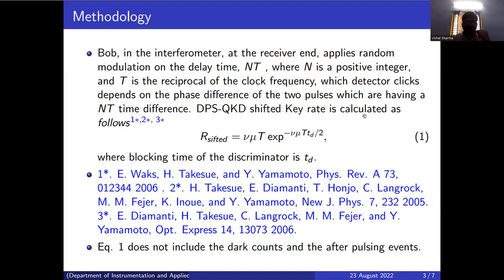In DPS QKD, it is like a Bob in the interferometer at the receiver that applies random modulation with delay time T, where the positive integer is the reciprocal of the clock frequency. The detector clicks depend on the phase difference of the two pulses, which have anti-time difference, and this gives the security.